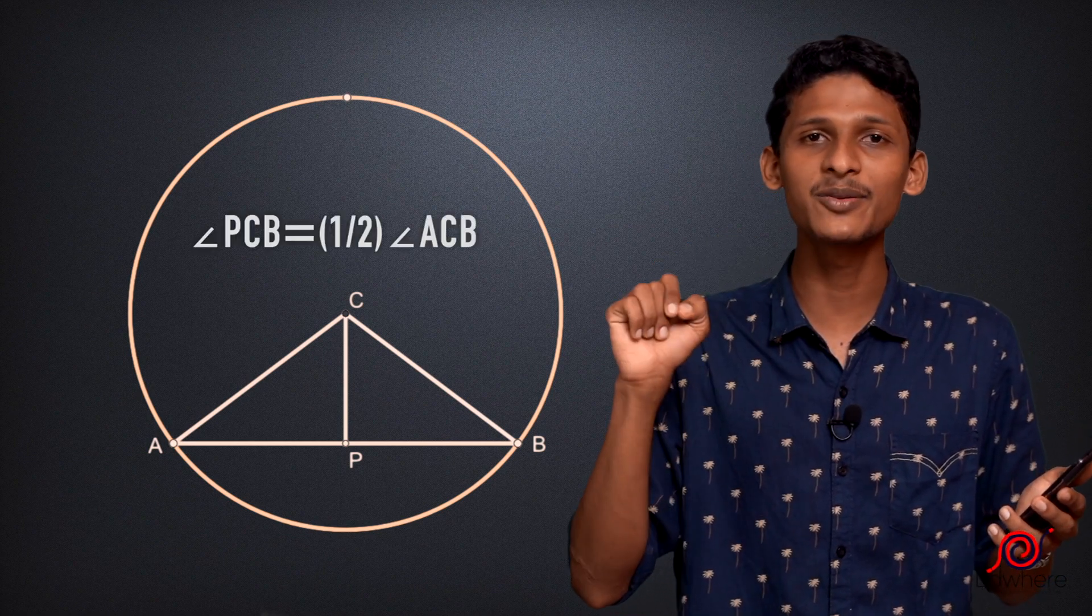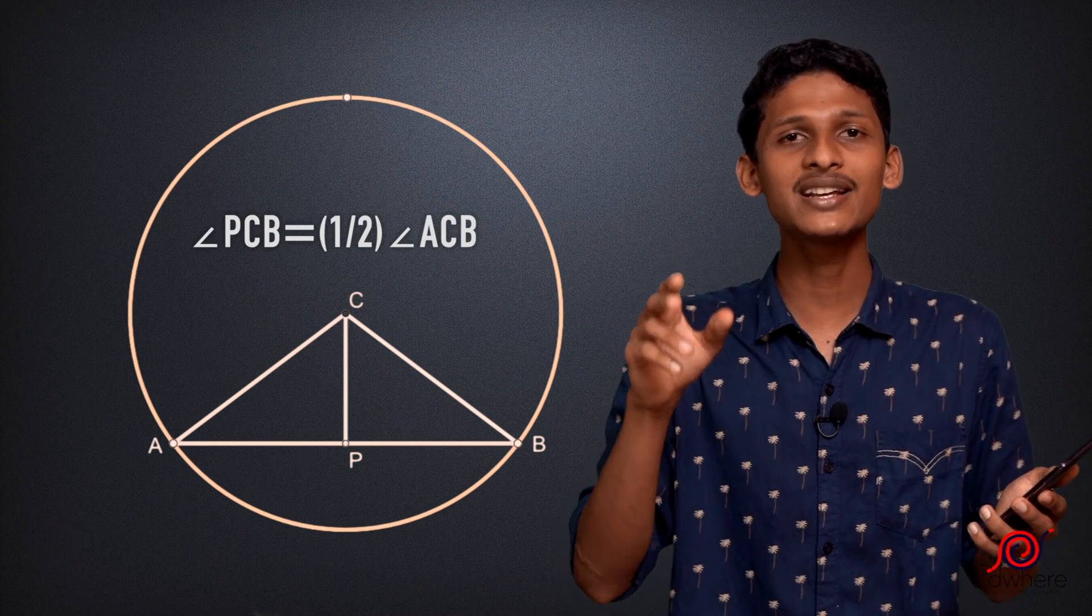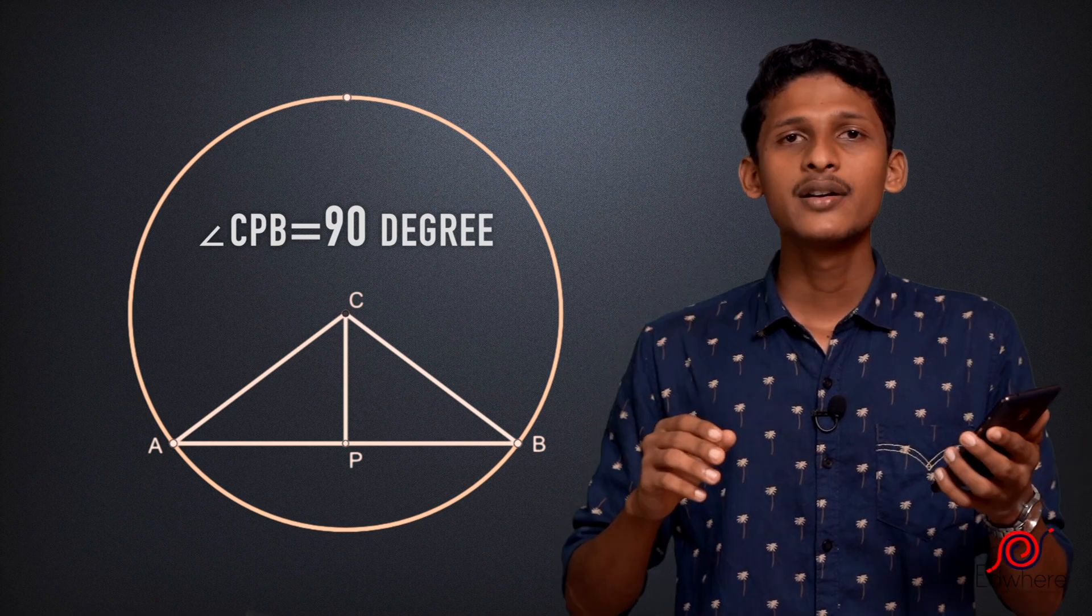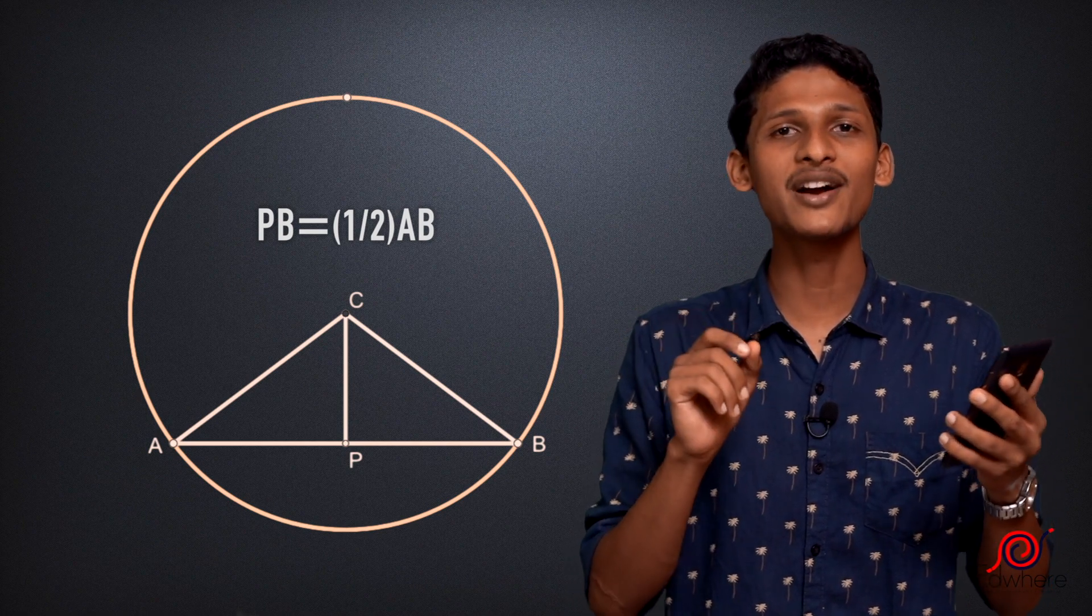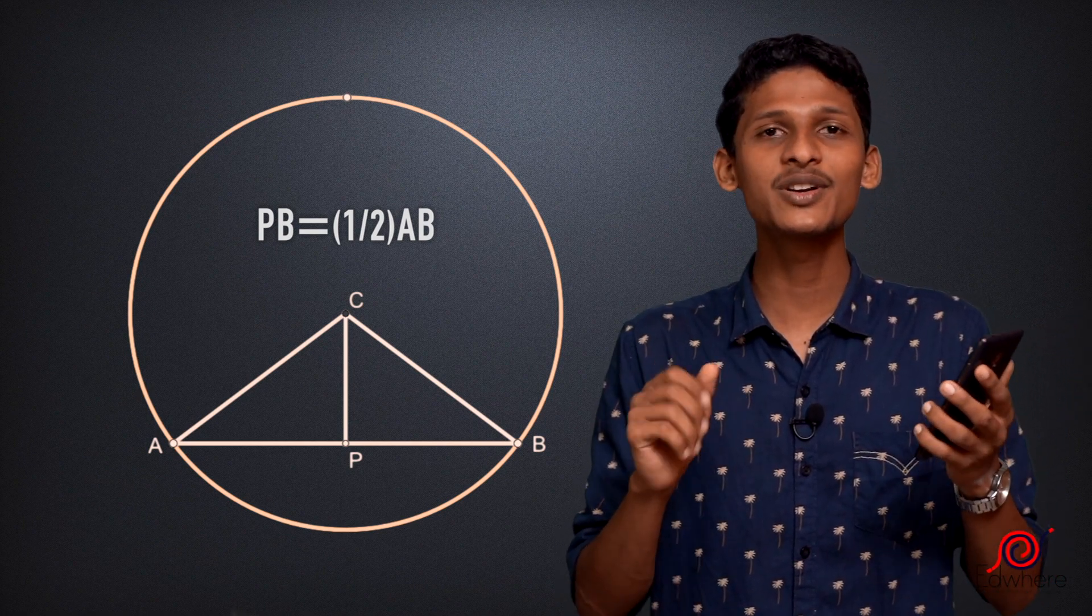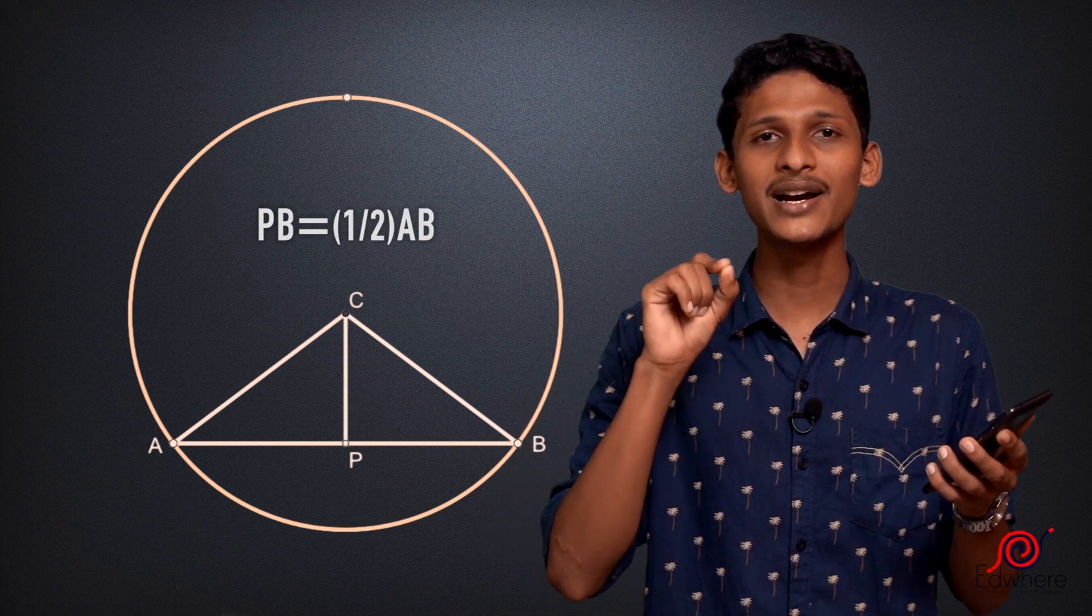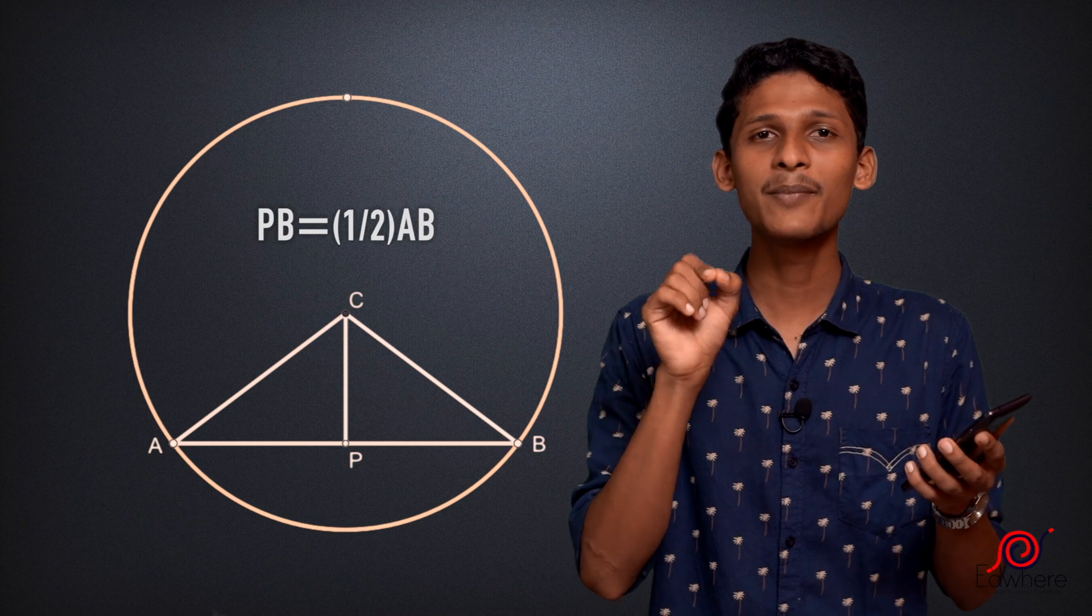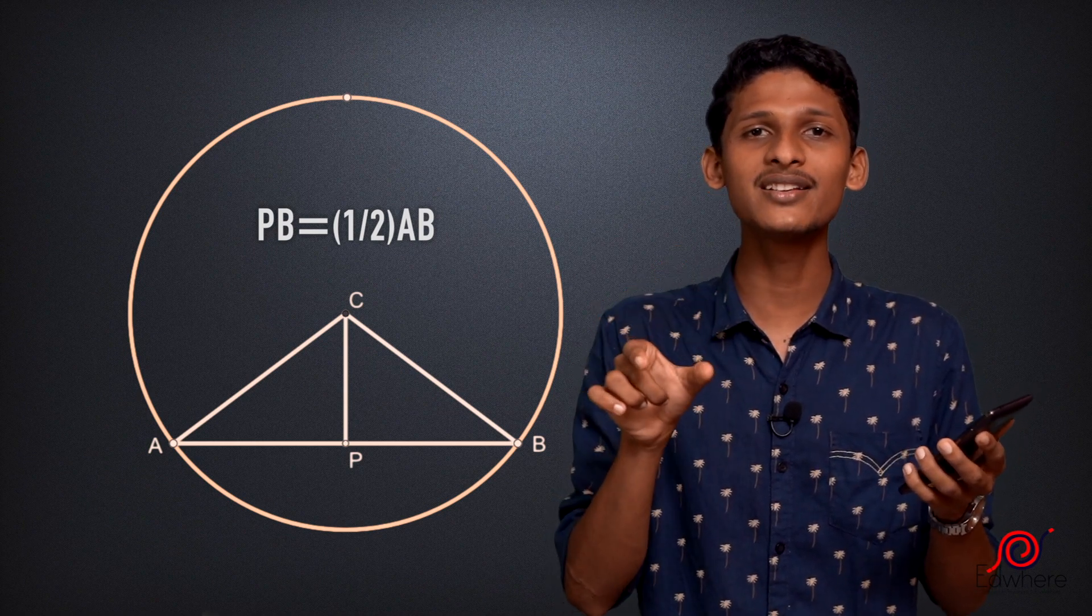This angle is PCB. This is half the central angle, that means it's going to be 90 degrees. What is the length of PB? The perpendicular from C bisects AB, so PB is half of AB.